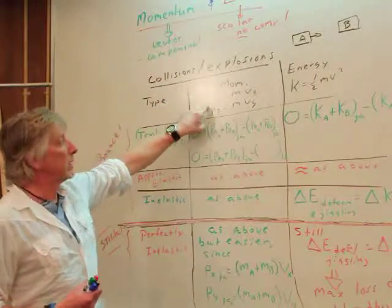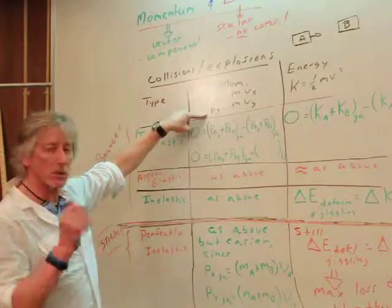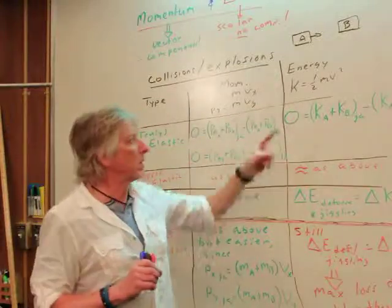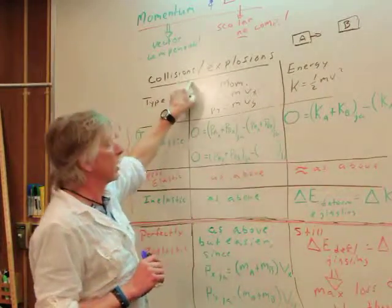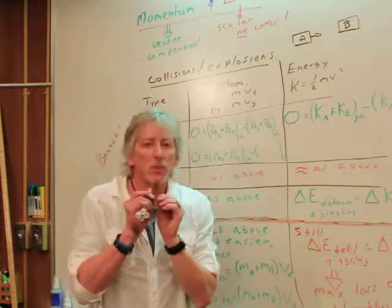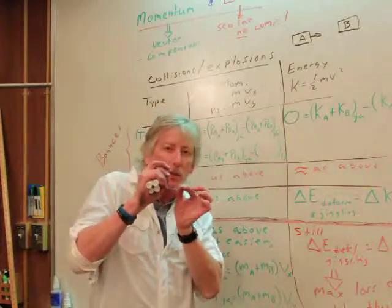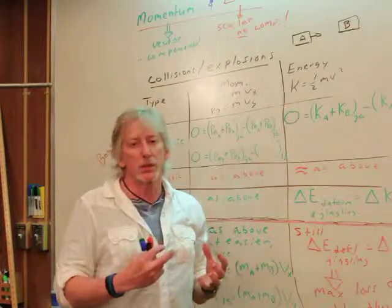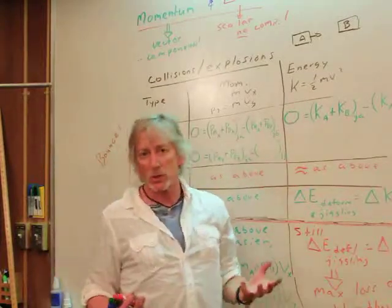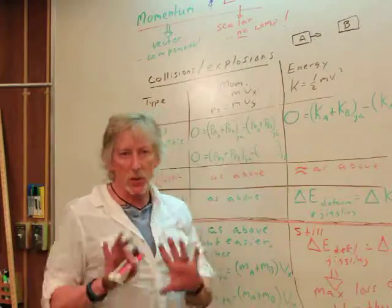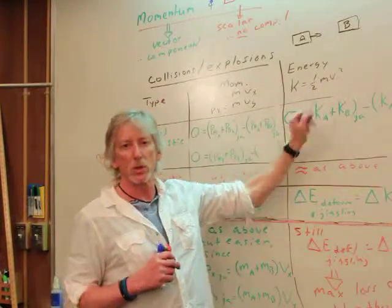We've got momenta in the x and the y direction. Set up your coordinate system to find your plus direction. Draw it or you'll get lost. Just take one step at a time. And then we've got energy. Now the nice thing here is we're dealing with just kinetic energy, one half mv squared. Why is that? Because we talked about collisions and explosions. We generally look just before and just after. And in that time, we often don't have much change in height. And we don't have much time for friction to affect it.